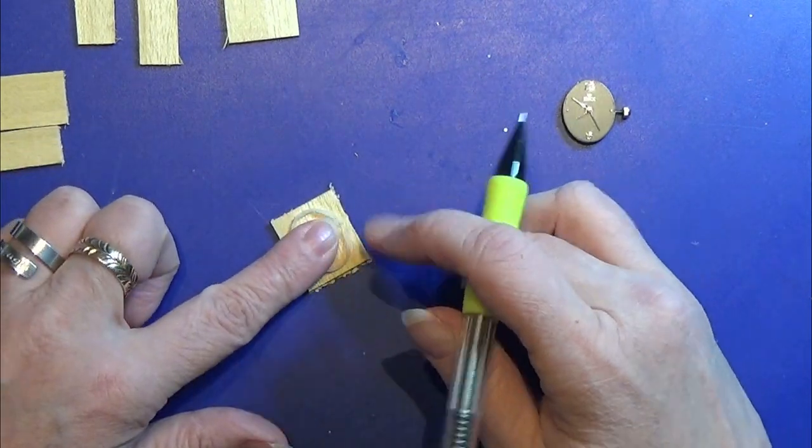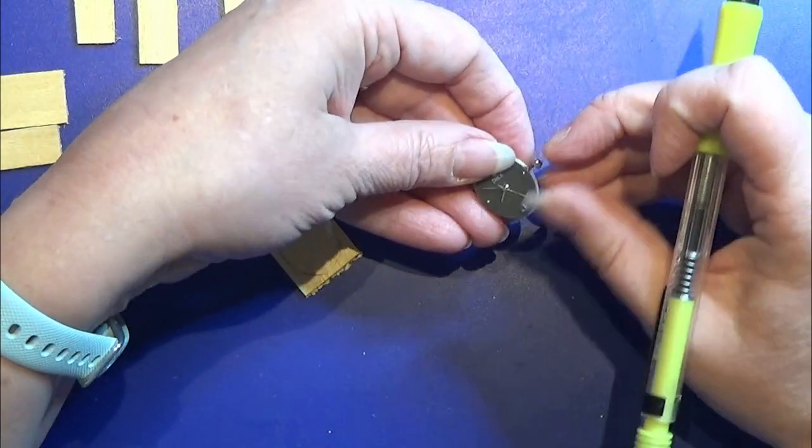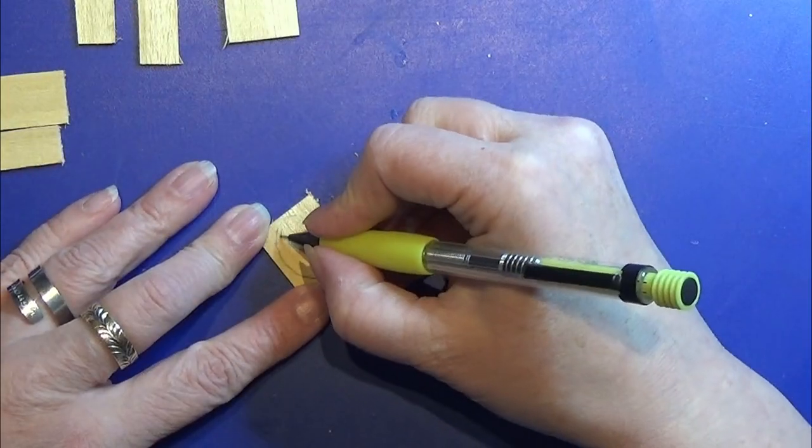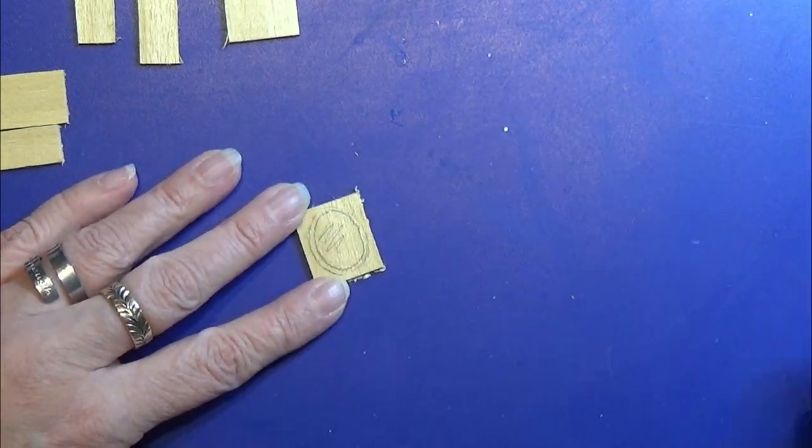First of all I'm going to take the wrist watch that I'm going to use for this one and I'm going to cut out this little hole here for the watch face to be in.